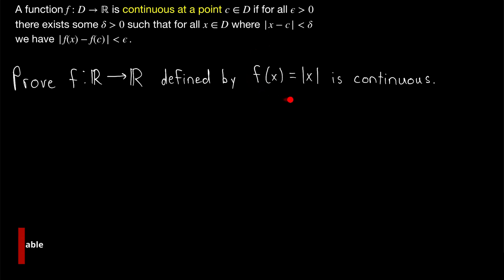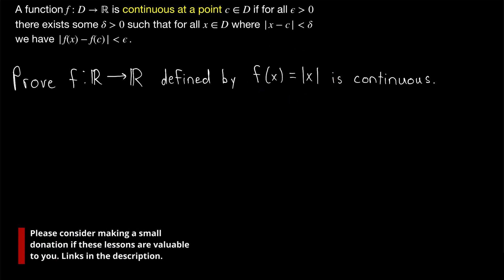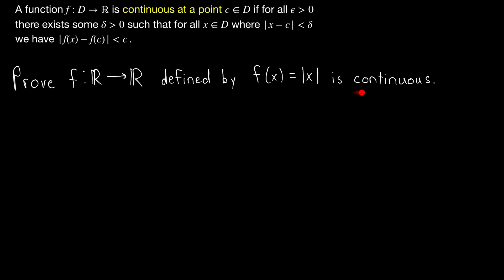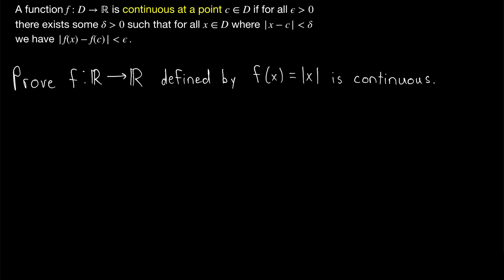We're going to prove that the function f of x equals the absolute value of x, with a domain and codomain of the real numbers, is continuous on its entire domain. We'll do this using the epsilon-delta definition of a function being continuous at a point, which is put here for your convenience. This is a straightforward continuity proof, so give it a try yourself. If you get stuck, consider the reverse triangle inequality.